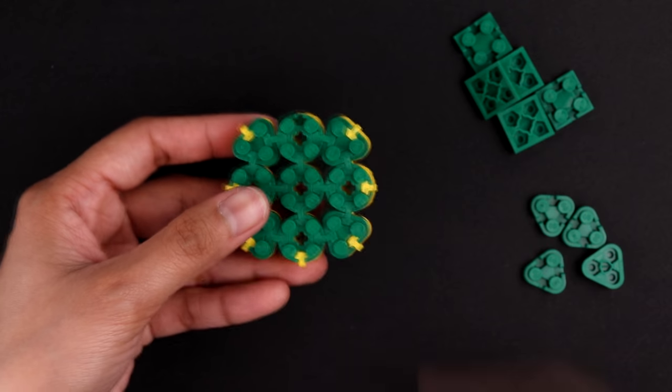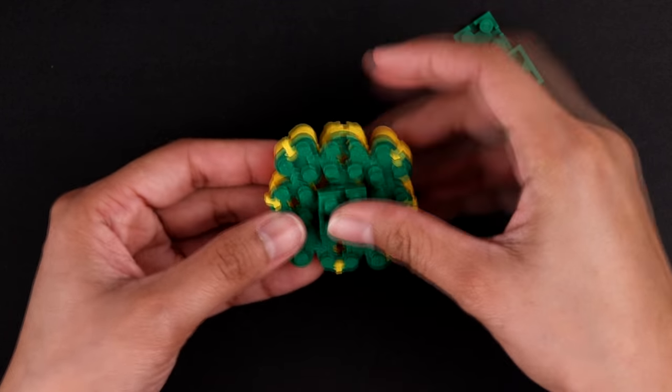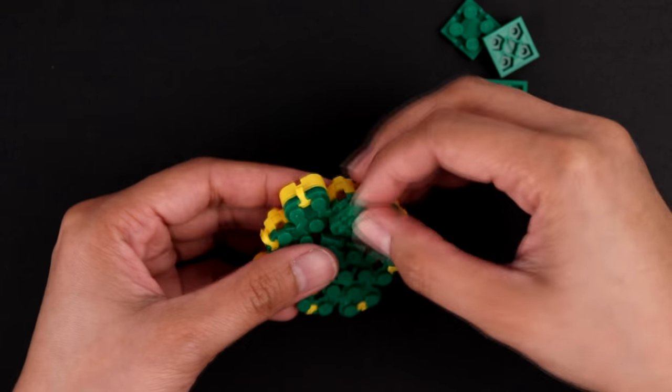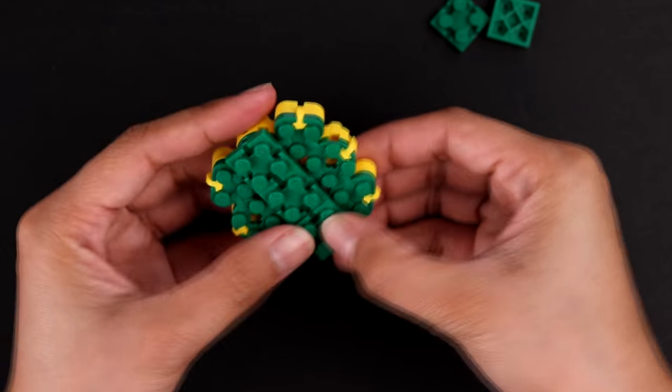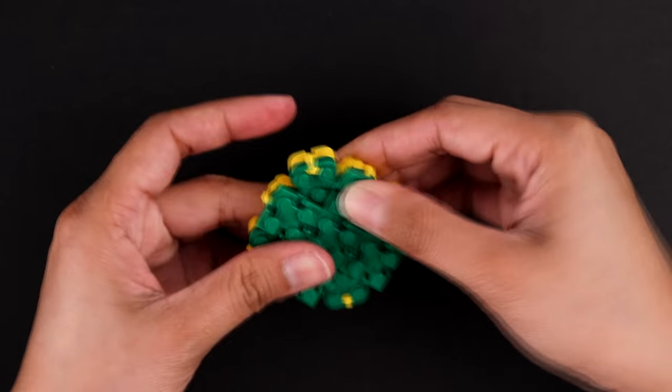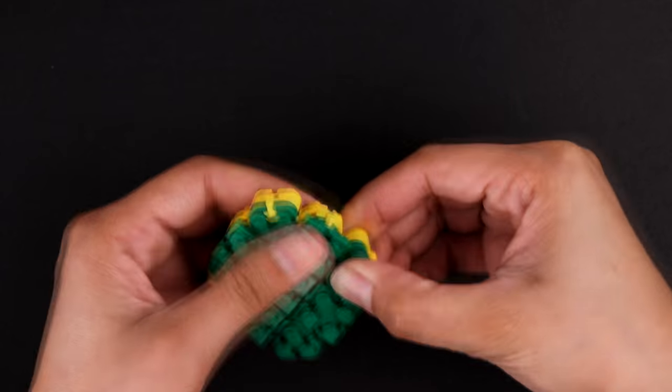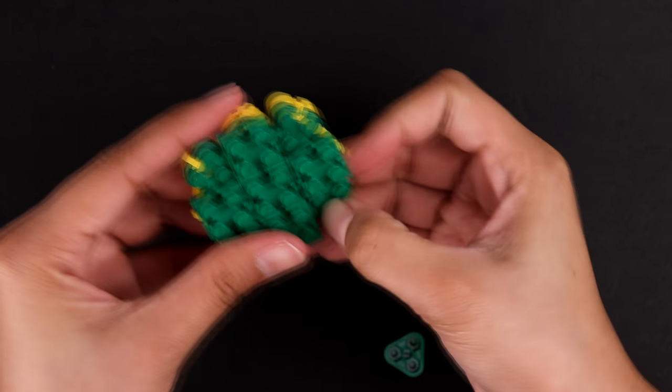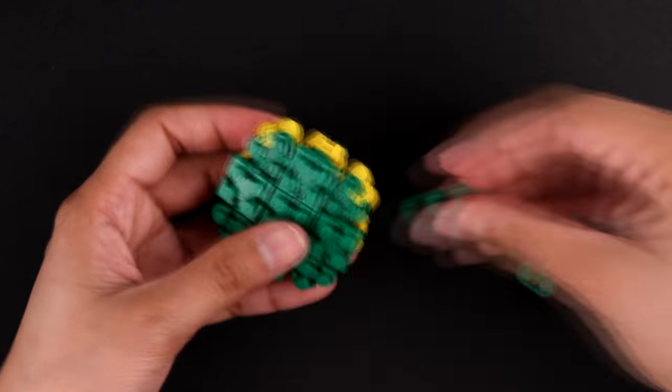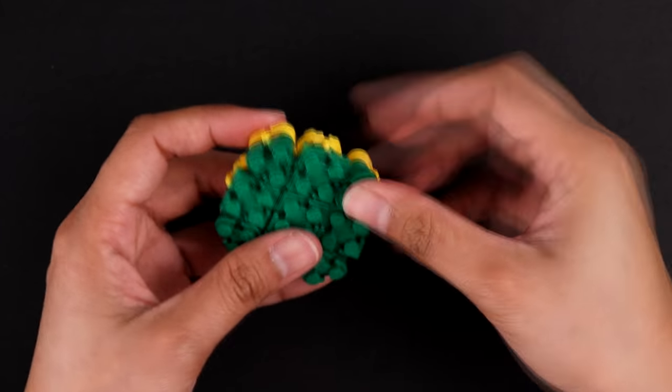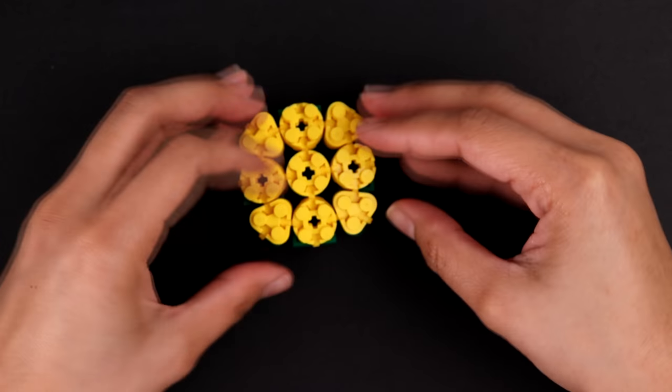If you are finding the tendons are popping out, you can place a brick on top straight away, rather than waiting until you've put all the tendons in. Once we have our second layer of green bricks on top, we have the body of our toad.